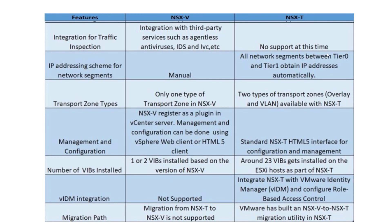For IP addressing of network segments: in NSX-V, IP addresses for DLR and Edge Services Gateway must be manually assigned. In NSX-T, all network segments between Tier-0 and Tier-1 obtain automatic IP addressing, making configuration and deployment simpler.